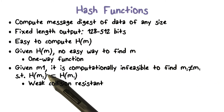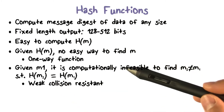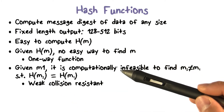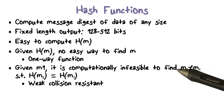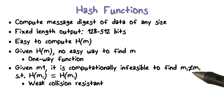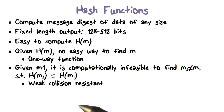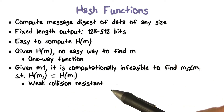Given input data, say m1, it should be computationally infeasible to find another input value, say m2, that is not equal to m1, such that they have the same hash value. This is the weak collision resistant property.